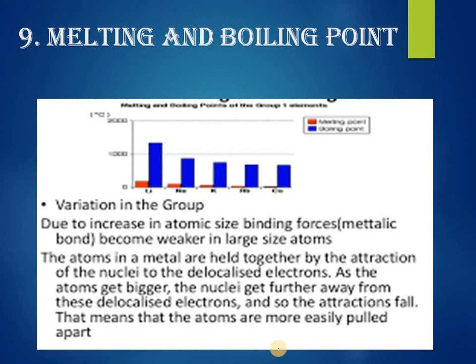Melting and boiling point are linked to the strength of the bond. The stronger the bond, the higher the melting and boiling point. This is the reason metals have high melting and boiling points — they have strong forces of attraction between their atoms.